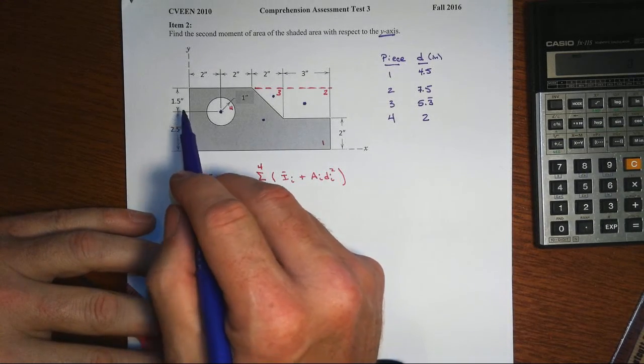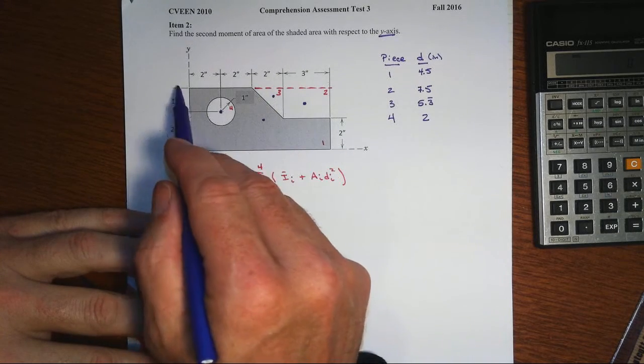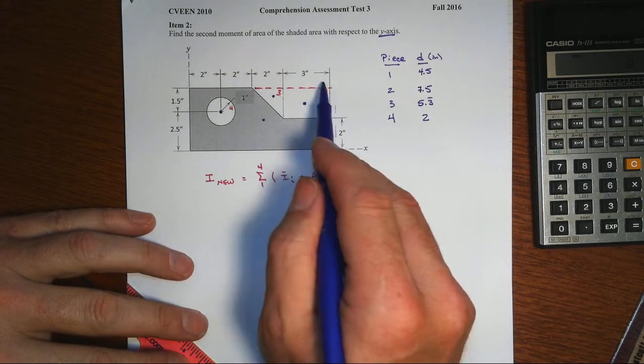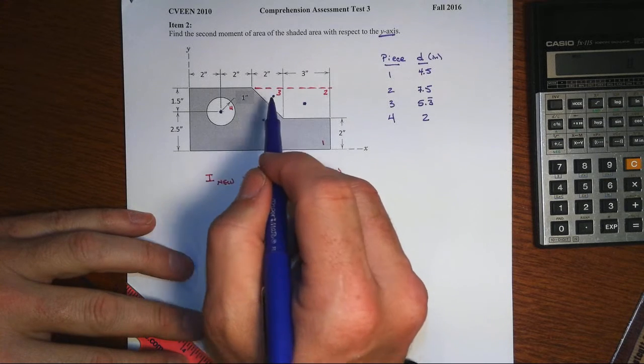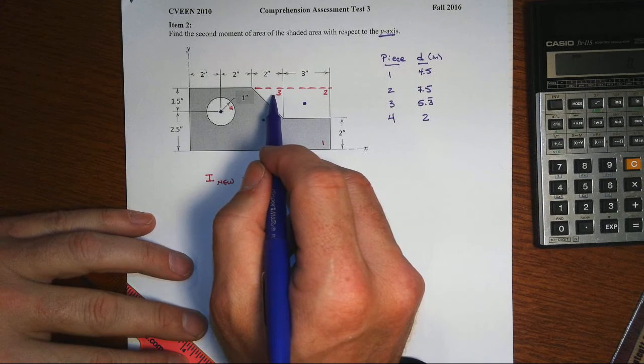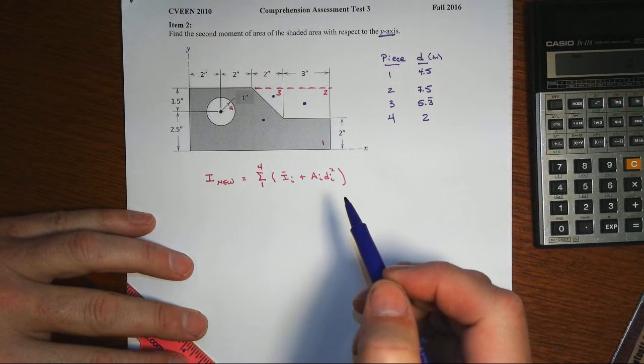I've chosen to break this up into one entire big whole rectangle that is 4 inches by 9 inches, and then cut out a rectangle 2 by 3, cut out a triangle that's 2 by 2, and remove a circle.